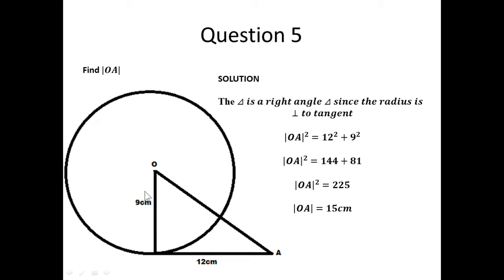So, if that is the case, this triangle here is going to be a right-angle triangle because this angle is 90 degrees. Our aim is to find line OA, which we can find using the Pythagorean theorem given the other two sides. Using the Pythagorean theorem — the square of the hypotenuse equals the sum of the squares of the remaining sides — we can find OA to be 15 centimeters.